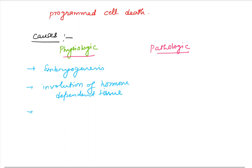Another physiologic condition is cell loss in proliferating cell populations. In bone marrow and thymus there is continuous proliferation of cells, so we cannot expect the cells to accumulate. There should be regulation so that we have a proper amount of cells, and this is controlled by the process of apoptosis.